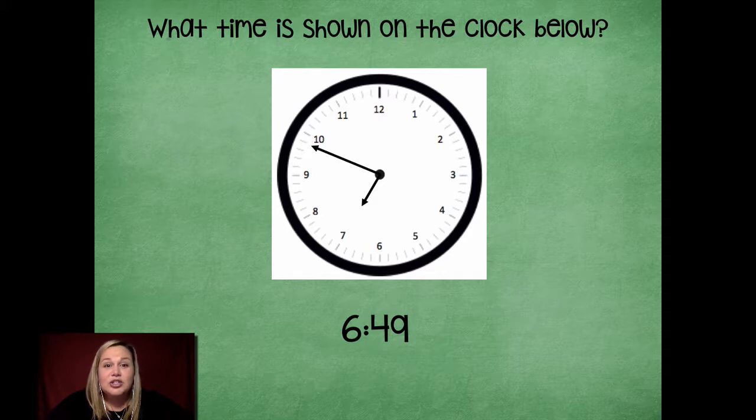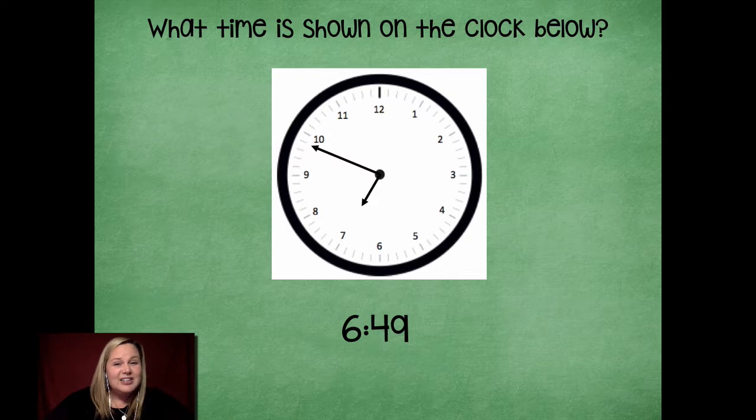Now don't get tricked and say this is 7:49. We know it's super close. The hour hand is super close to that seven for the next hour. But notice where the minute hand is. It's at 49. So our hour hand is going to be close to that next hour, but not quite there yet.